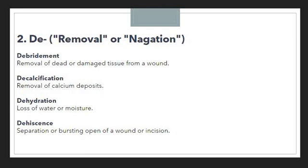Whenever we are removing dead tissue from a wound, we use the prefix DE to show debridement. Next we have decalcification, which means removal of calcium deposits from the body. The prefix DE is denoting the removal. After that we have dehydration, which means loss of water or moisture — a very commonly used term.